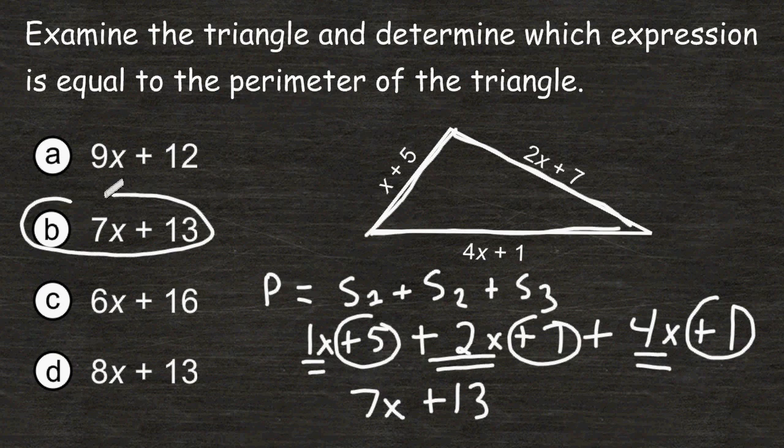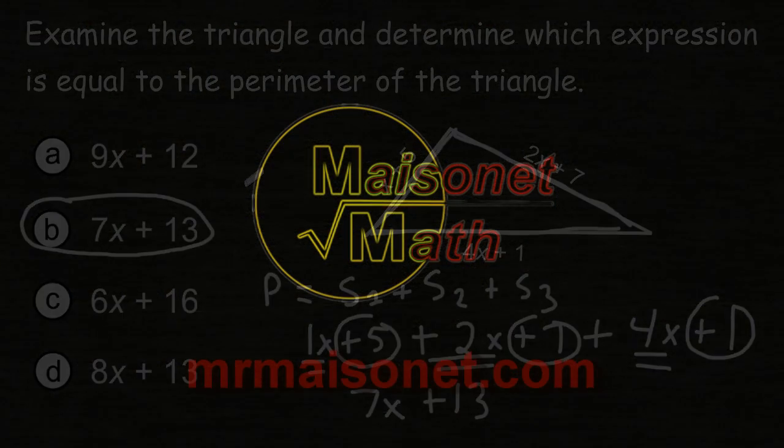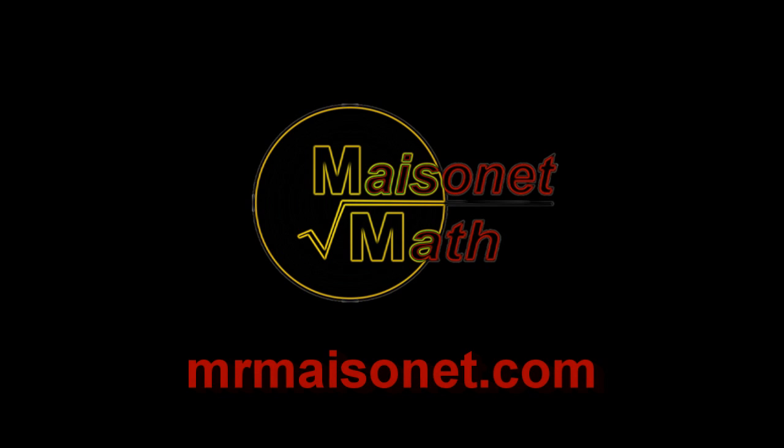So 7x plus 13 represents the perimeter of the triangle shown.